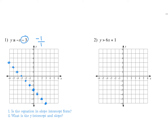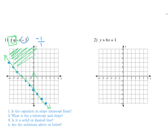Now decide: solid or dashed line, and shade above or below? In this case it's greater than or equal to. The 'or equal to' means it's a solid line — it's an equation and inequality combined. Place your pencil on the y-intercept: y-values greater than that value are up here, so all of those points are solutions. Shading shows every solution to that inequality.